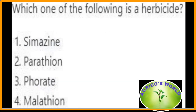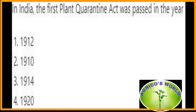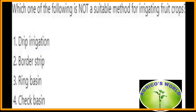Which one of the following is a herbicide? Simazine is a herbicide mostly used in maize crop. In India, the first planned quarantine act was passed in the year 1914. Which one of the following is not a suitable method for irrigating fruit crops? The border strip method is not suitable for irrigating fruit crops; fruit crops can be irrigated by drip irrigation, ring basin, or check basin methods.